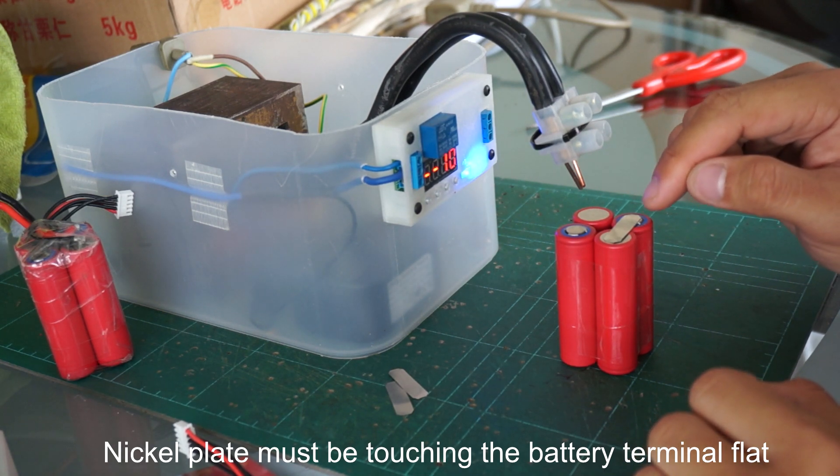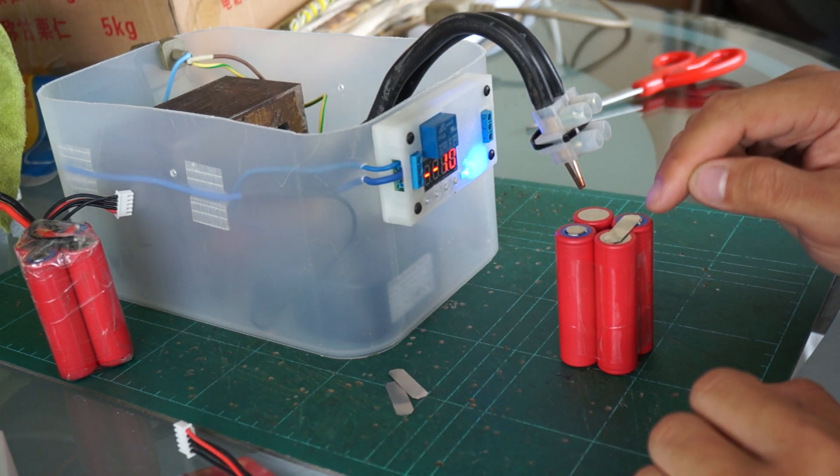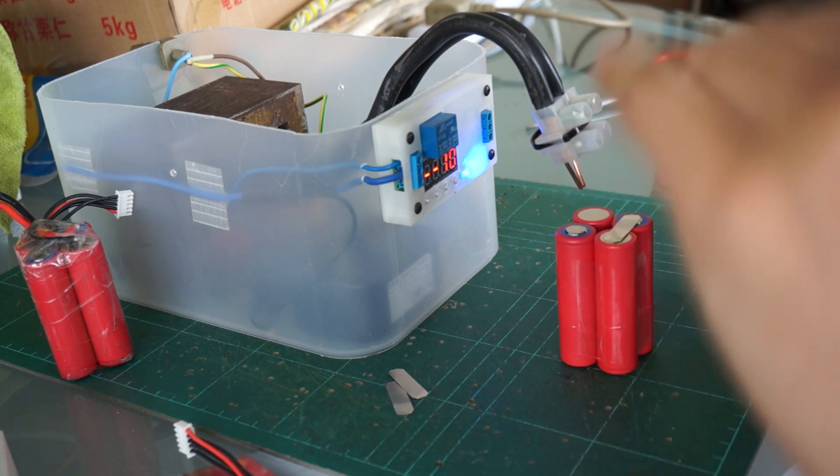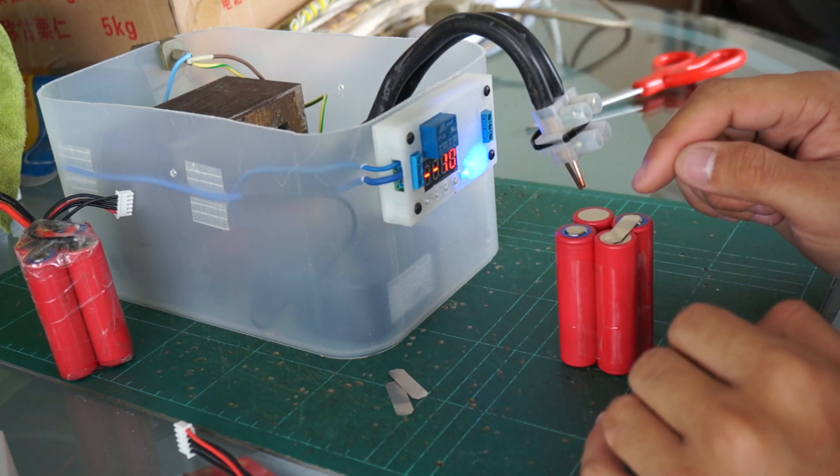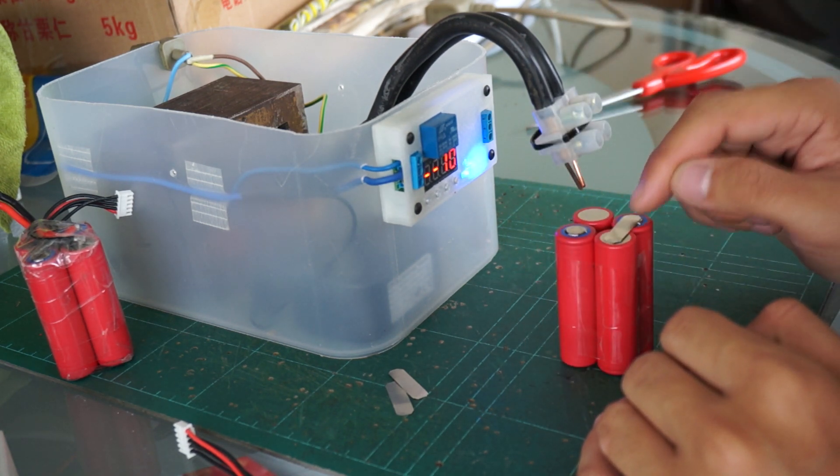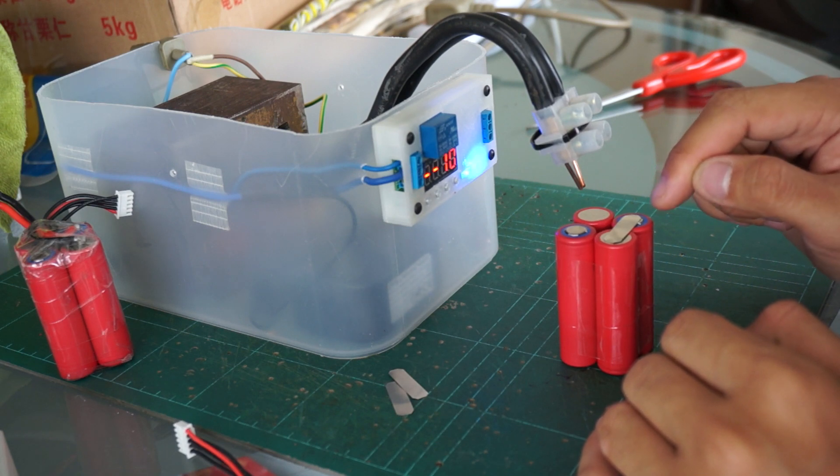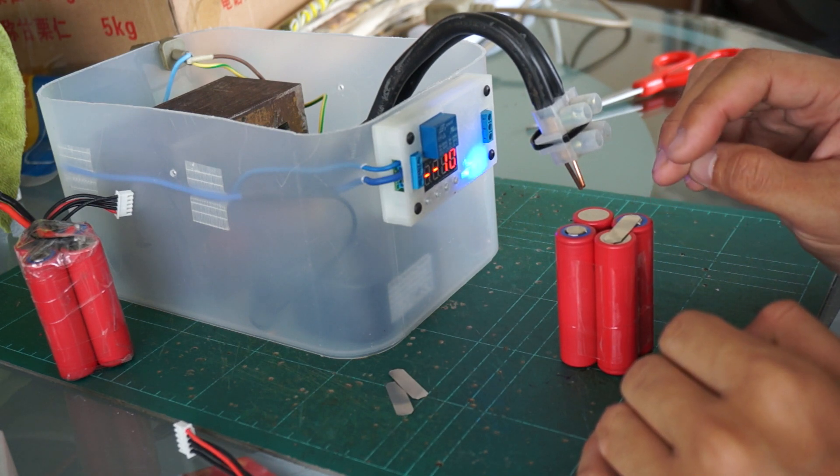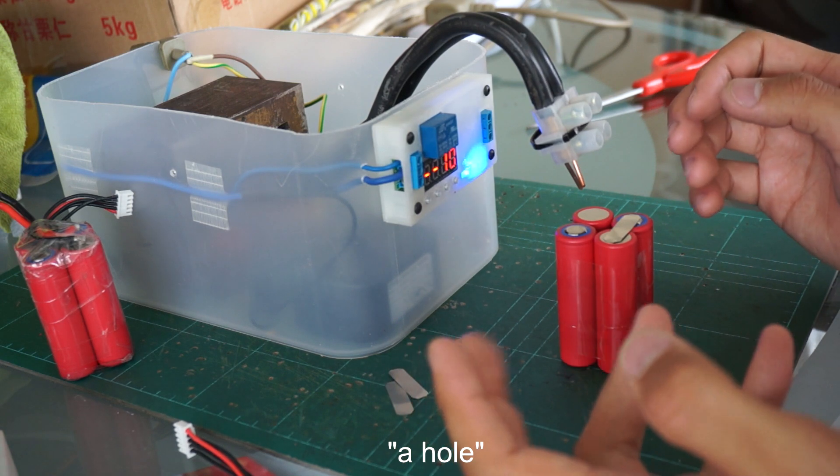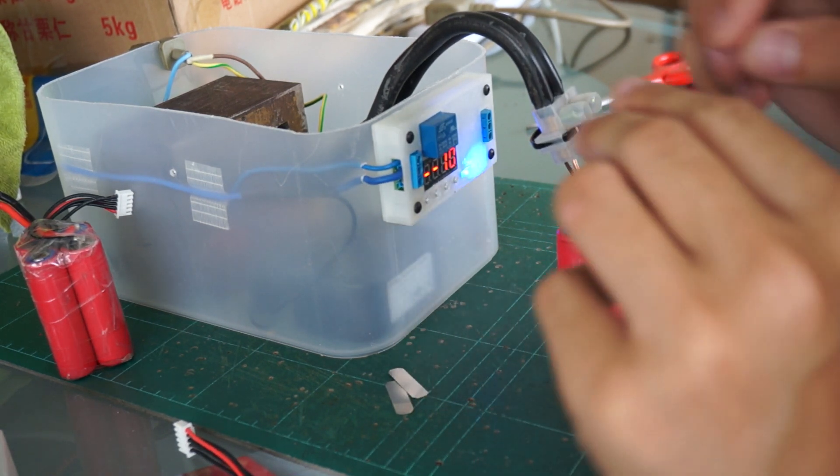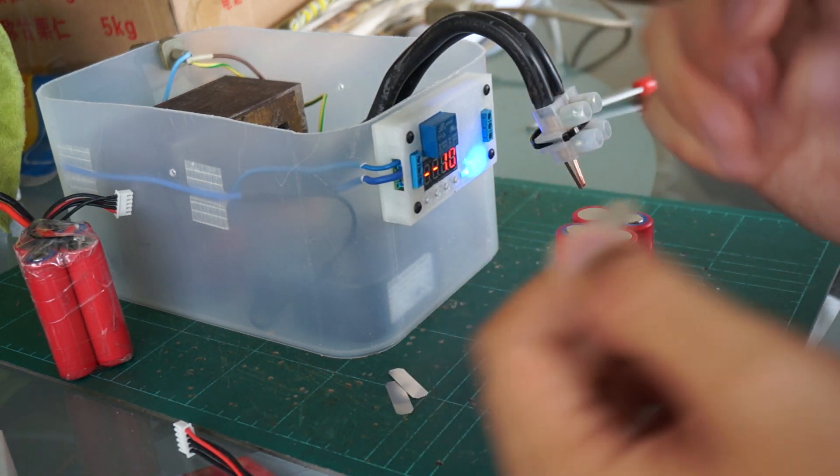Let's start. You have to make sure that the nickel plate is touching and the whole of it is touching on the battery terminal. Otherwise if there's a gap when you weld, instead of the plate welding onto the terminal, you create a hole inside - you weld just on the plate and create a hole.